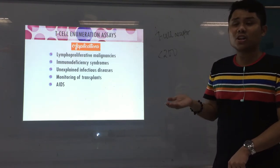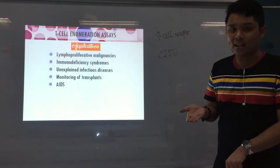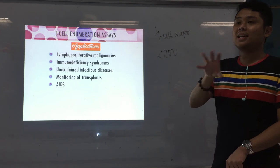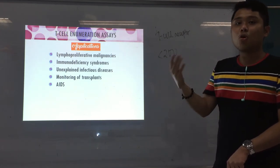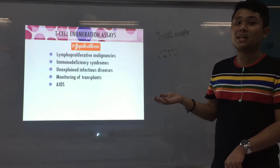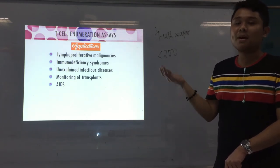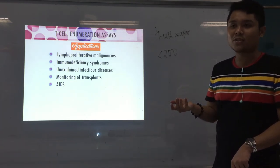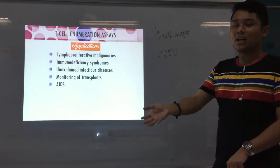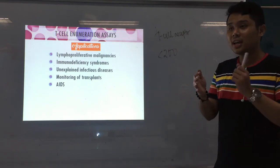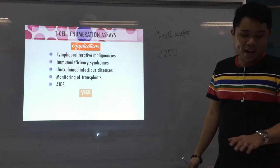In HIV patients, CD4 count is monitored because the function of CD4 T-helper cells is to signal other immune cells — especially B-cells — that a pathogen is present. If the CD4 count decreases, that signal is lost, weakening the entire immune system. That's why we need to enumerate your T-cells.